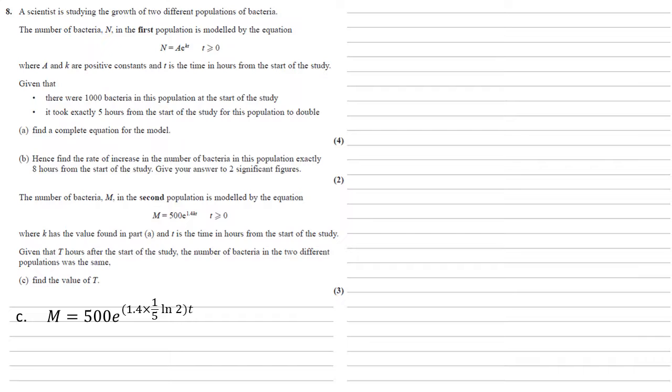So we've got m equals 500 e to the 1.4. We know what k is already so we'll put that in, so that's a fifth log natural 2 all times by t, which simplifies to 500 e to the 0.28 times log natural 2 times by t. We know that at t hours this has got to be the same as the population in the first group, so we're setting them equal to each other: 1000 e to the fifth log natural 2 t is equal to 500 e to 0.28 log natural 2 t.